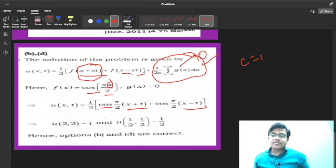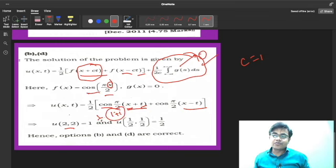But in the question you are asked to find u(2,2). So in place of x you will put 2, in place of t you will put 2. So 2 plus 2 is 4 and 4/2 is 2, so cos(2π). cos(2π) will give you 1. And once again 2 minus 2 is 0, cos(0) is 1. So it will become (1+1)/2, so u(2,2) will be 1.